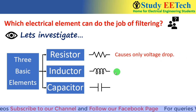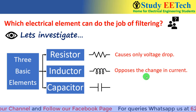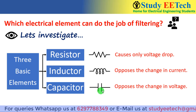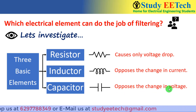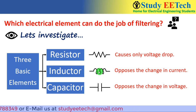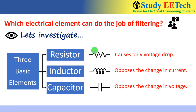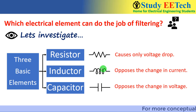The inductor opposes the change in current, and the capacitor opposes the change in voltage. The inductor and capacitor are energy-storing elements: the inductor stores energy in the form of a magnetic field and the capacitor stores energy in the form of an electric field. The resistor only dissipates heat energy as I²R. We are interested in L and C.